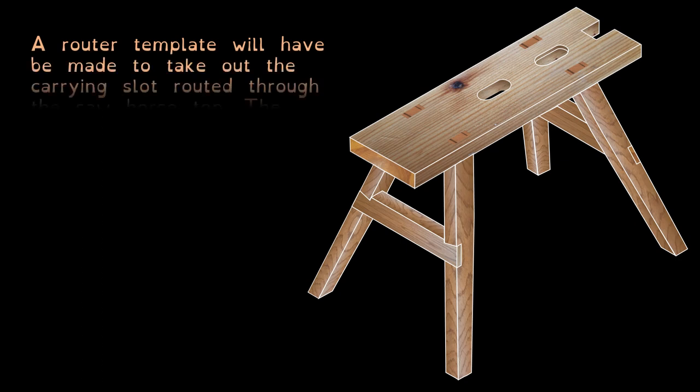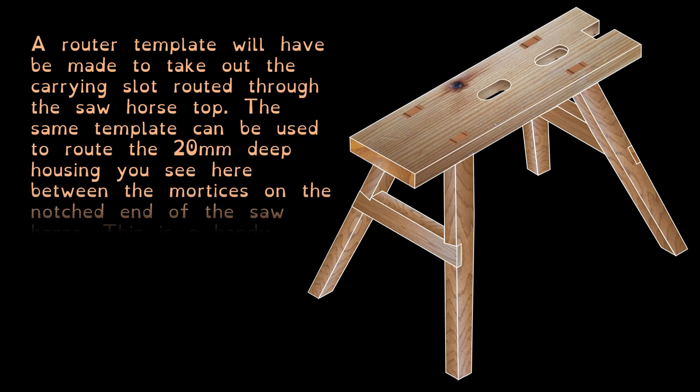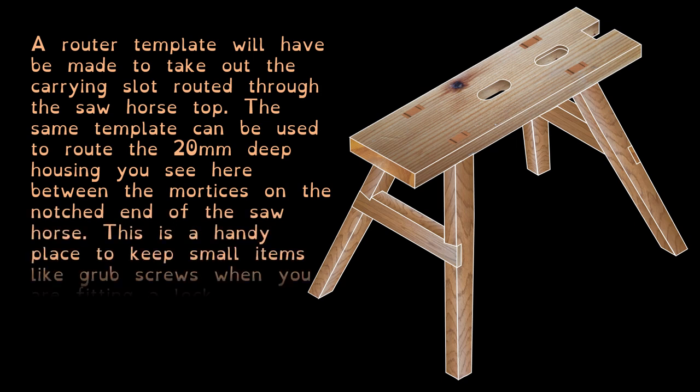A router template will have to be made to take out the carrying slot routed through the sawstool top. The same template will be used to take out that 20mm deep housing you see between the mortises on the notched end of the sawhorse. This is a handy place to keep small items like screws when fitting a lock on a door.